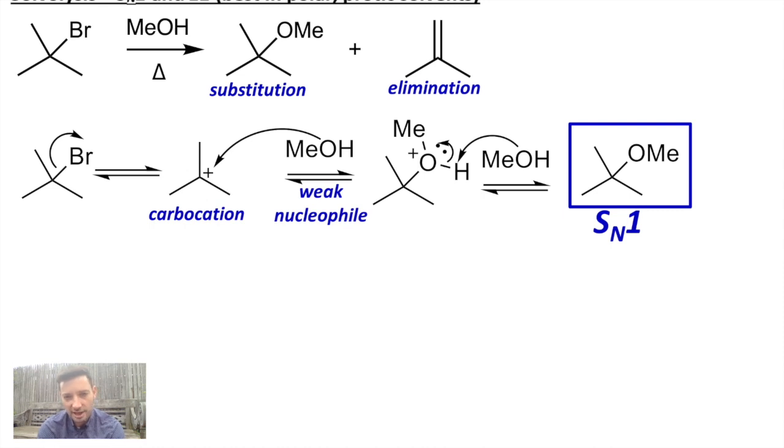So what makes this different from the SN2 is, first of all, you'll notice it's involving tertiary halides as opposed to primaries or methyls, and so we're talking very hindered halides, and we're using weak species, not strong species. So this isn't methoxide, this is methanol. So there's time for that bromine to leave on its own and form this carbocation intermediate. This makes this so different.